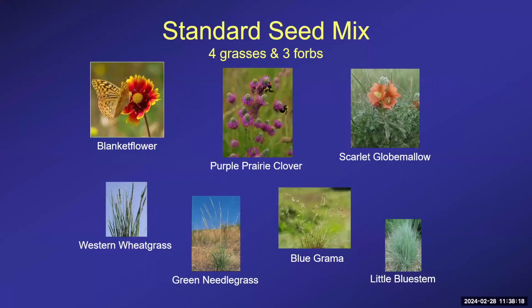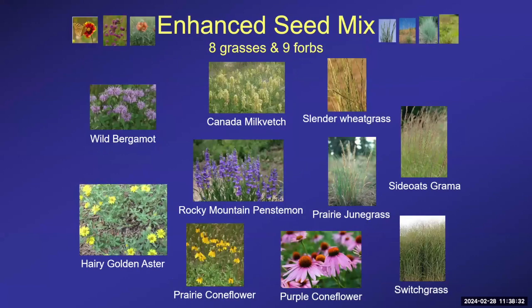The standard seed mix has four grasses and three forbs: blanket flower, purple prairie clover, scarlet globe mallow, western wheatgrass, green needlegrass, blue grama, and little bluestem. The enhanced seed mix includes all of the standard mix plus wild bergamot, Canada milkvetch, slender wheatgrass, Rocky Mountain penstemon, prairie junegrass, sideoats grama, hairy golden aster, prairie coneflower, purple coneflower, and switchgrass — giving eight grasses and nine forbs in total.